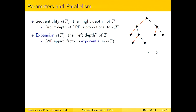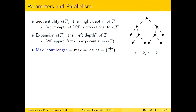We are playing a delicate game of balancing sequentiality and expansion. Given sequentiality s and expansion e, the maximum number of leaves (input length) is given by (e+s choose s), and the tree achieving this maximum can be constructed via dynamic programming. For s=2 and e=2, this gives a tree with six leaves, as expected.